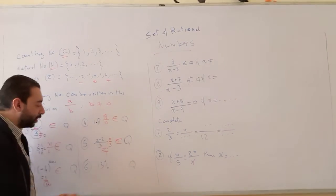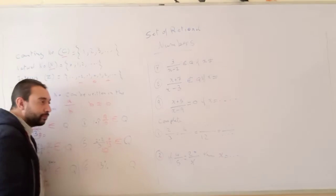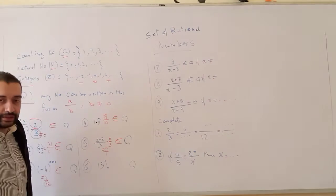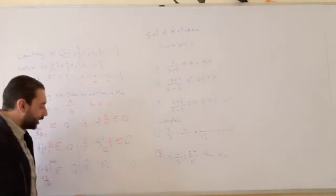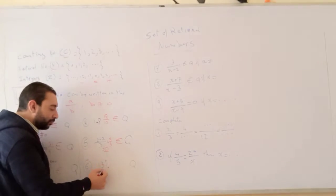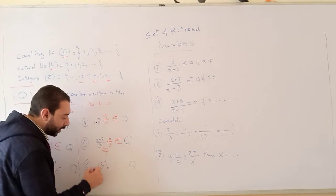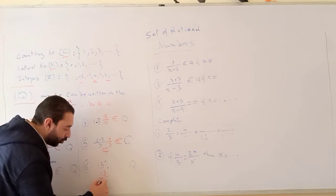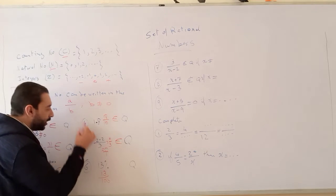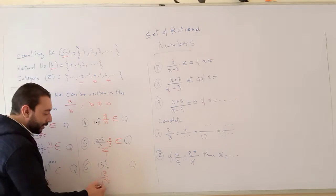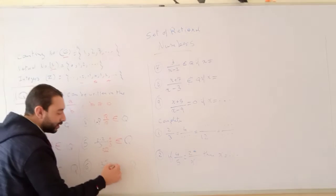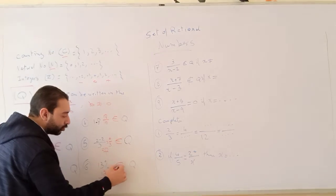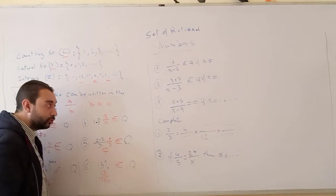13 percent. What do we mean by the word percent? Percent means comparing a number to 100. So 13% is 13 over 100, which is A over B, and B is not equal to 0. Then this belongs to Q.